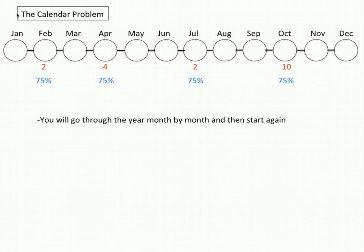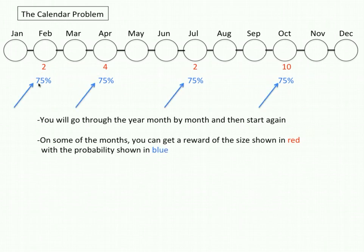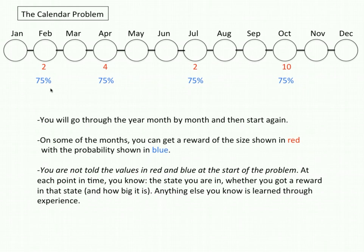The calendar problem consists of a setup like this with the months of the year and you will go through the year month by month and start again. So here I'm showing your transition from January to February to March and so on. These red numbers highlighted here, those are rewards that you're going to get in those months and they're the size shown here 2, 4, 2, and 10. Those numbers in blue are the probabilities with which you're going to get these rewards in those months. So for example there's only a three-fourths chance that you're going to get this reward of 2 in February.